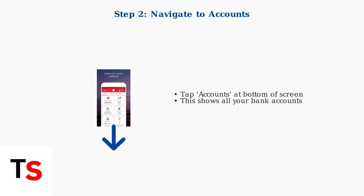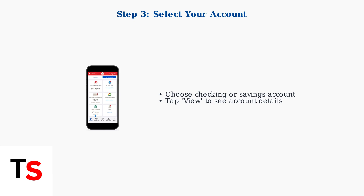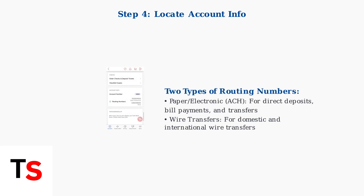Look for the Accounts tab at the bottom of the screen and tap on it. Select the checking or savings account you want to access by tapping the View button next to it. This will open the Detailed Account Information screen. Scroll down to the Account Info section.